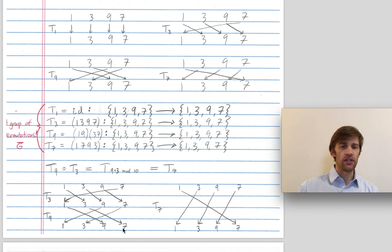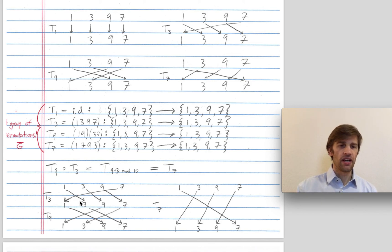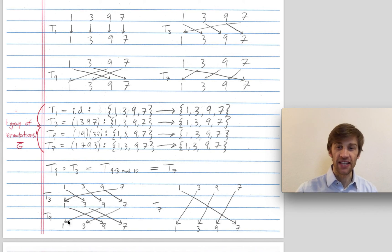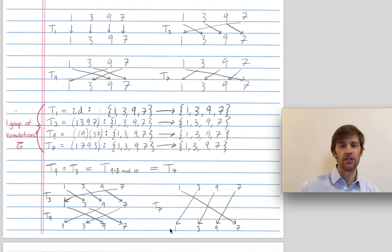1 is mapping to 3, which is going to 7, as we want. 3 is mapping to 9 and back to 1, as we want. 9 is mapping to 7 and to 3, as we want. 7 is mapping to 1 and then to 9, as we want. This shouldn't be surprising because doing T3 is just multiplying by 3, and doing T9 is just multiplying by 9. So in total we're multiplying by 3 and then by 9, or multiplying by 27. But mod 10, we're just multiplying by 7. So 3 is going straight to 3 times 7, which is 21, or 1.